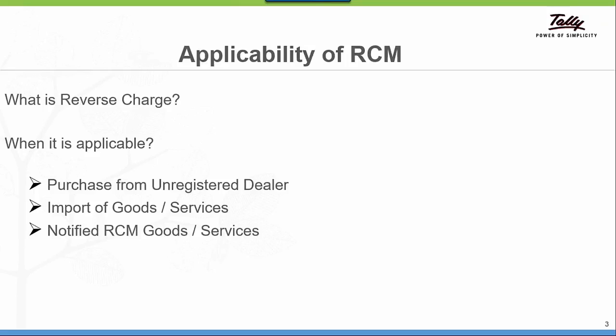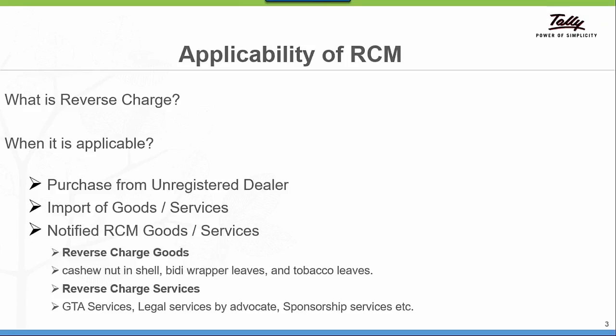The CBC-notified reverse charge goods include cashew nuts in shell (shelled or unpeeled cashew nuts), bidi wrappers (tendu leaves), and tobacco leaves. These goods fall under reverse charge. With regard to reverse charge services, there are many services — a few listed here include GTA services, legal services by advocate, sponsorship services, etc. These are all the reverse charge goods and services notified by the CBC department.